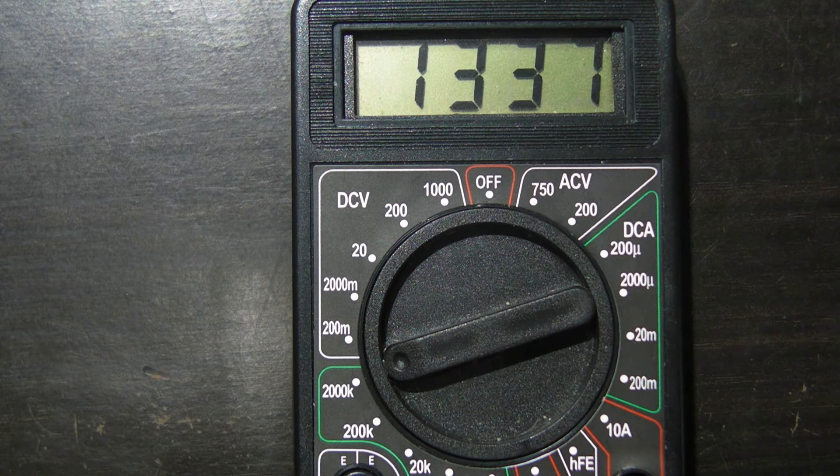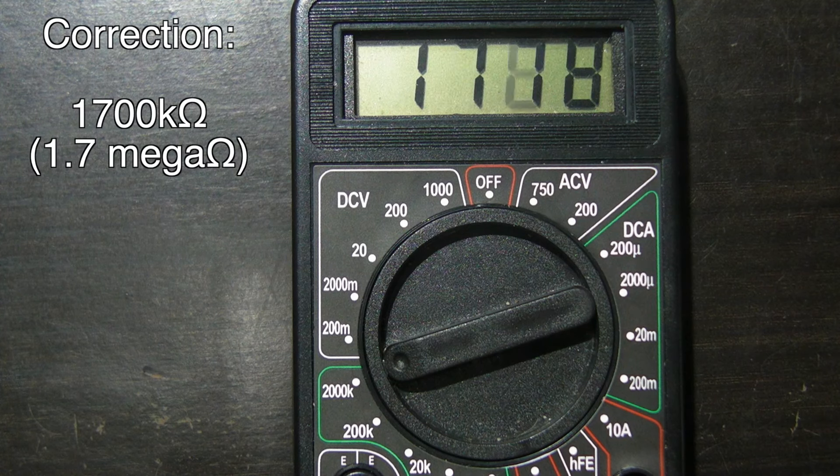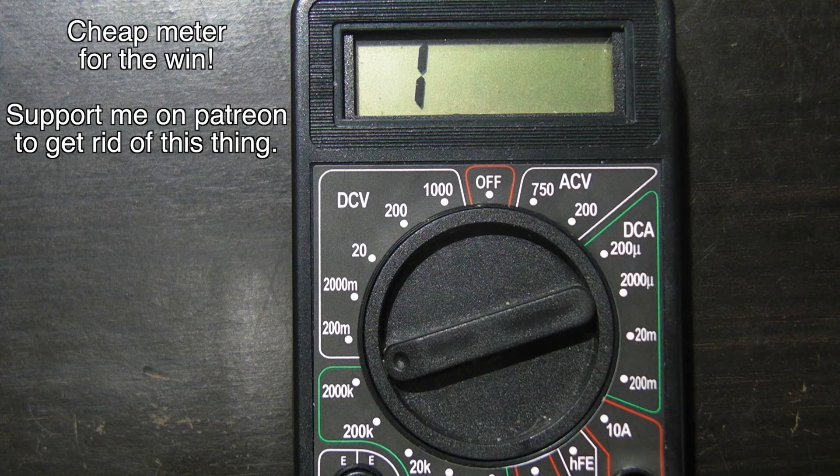The darker the environment that this LDR experiences, the higher its resistance becomes. We are now measuring over 17 kiloohms, and eventually it'll get so dark my multimeter can't register its resistance.